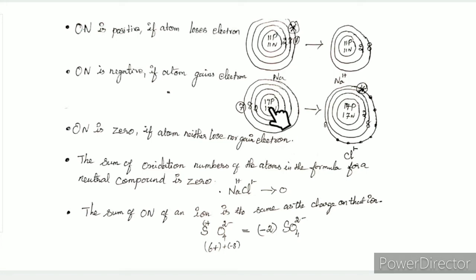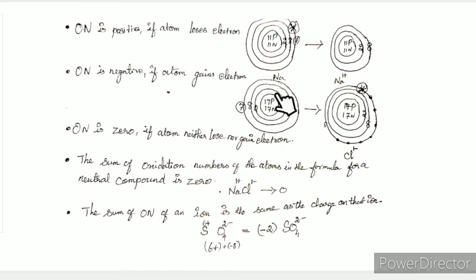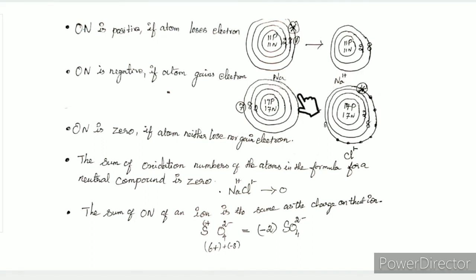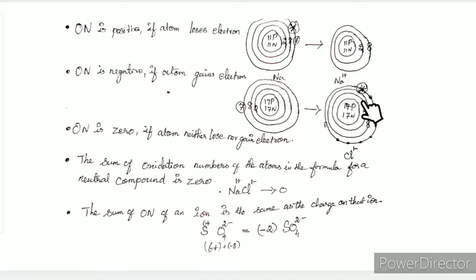Chlorine has 17 protons and 17 electrons. The atom is neutral. Chlorine gains 1 electron. Its outer shell has 7 electrons, which becomes 8 after gaining one electron — giving an electron configuration of 2, 8, 8.